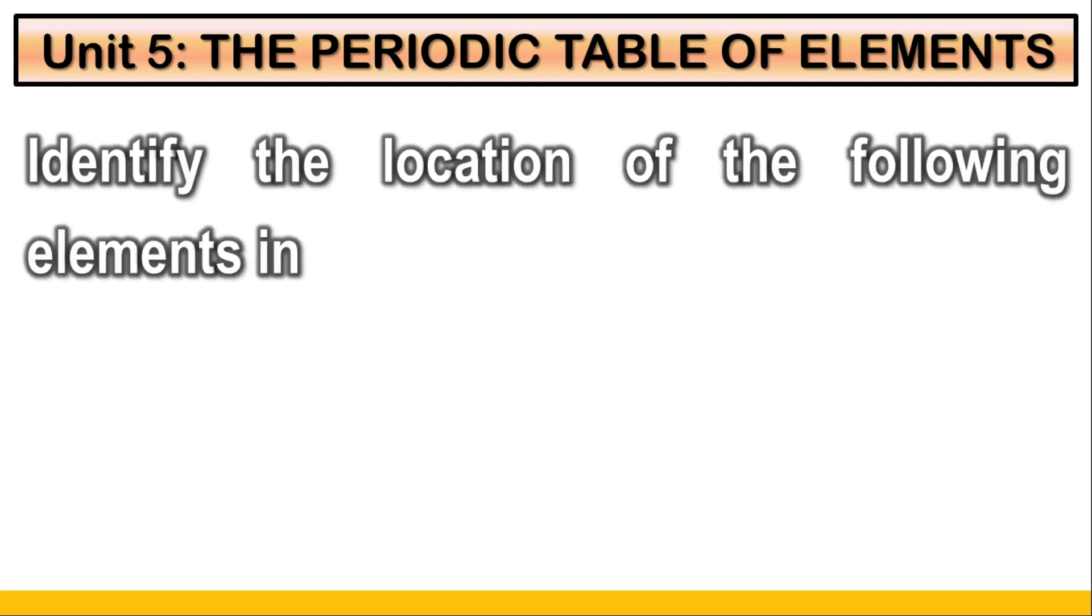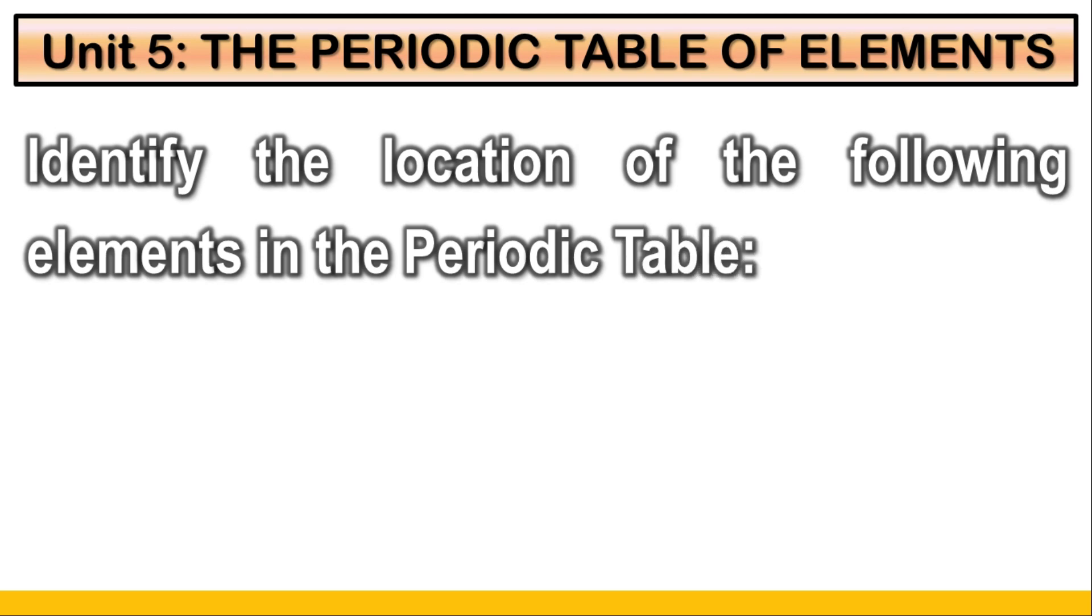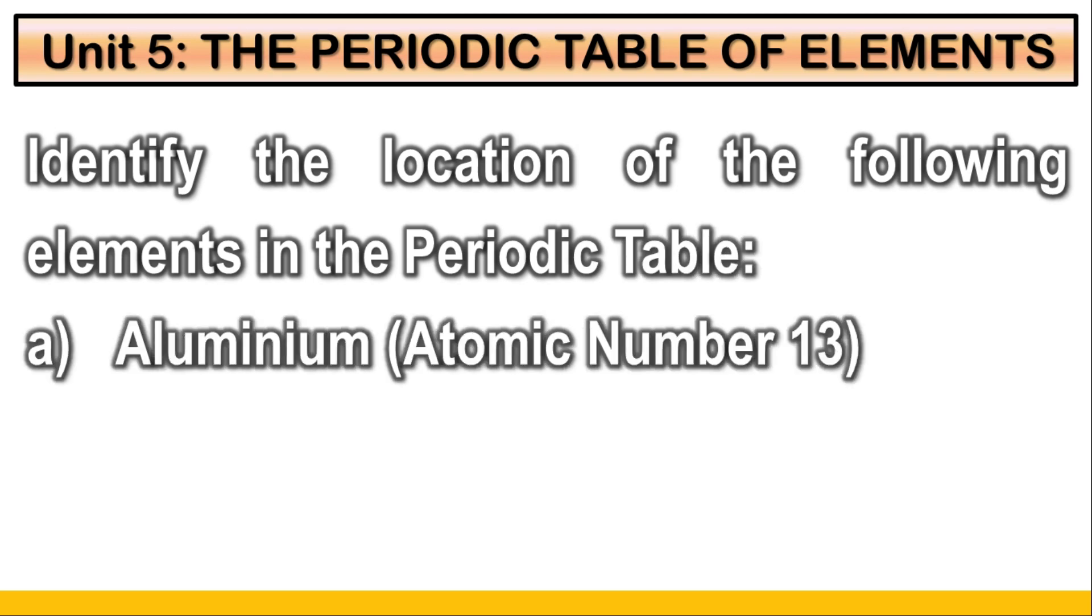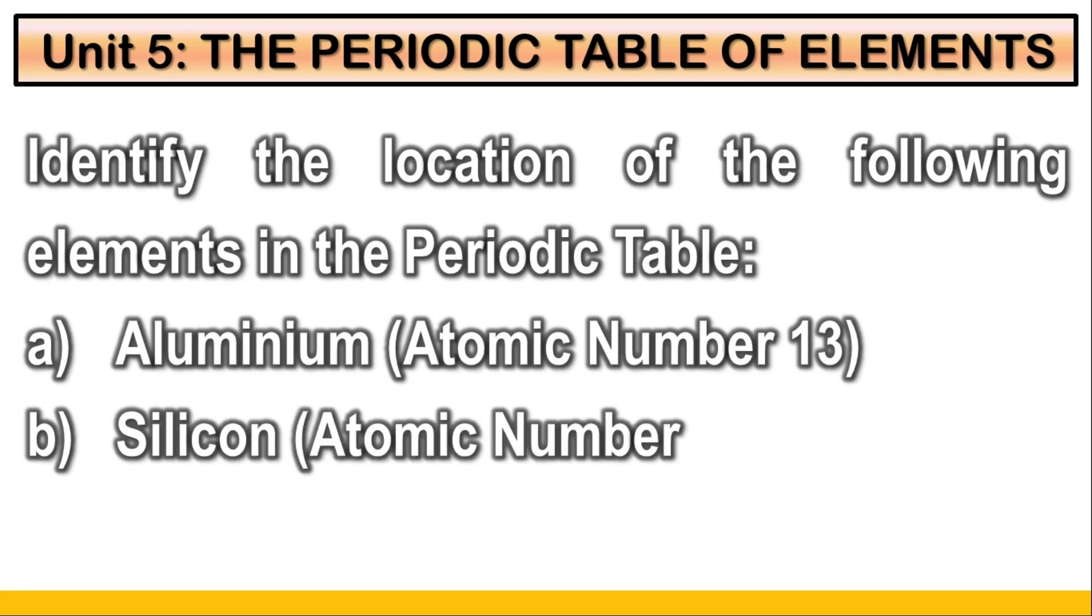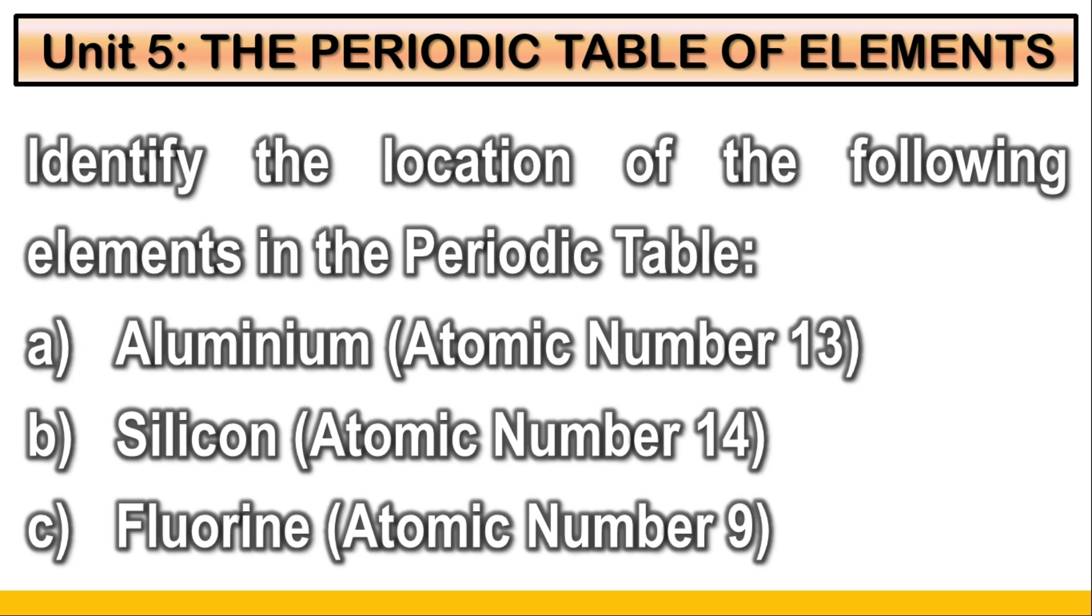Identify the location of the following elements in the periodic table: Aluminium atomic number 13, Silicon atomic number 14, Fluorine atomic number 9.